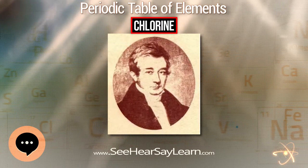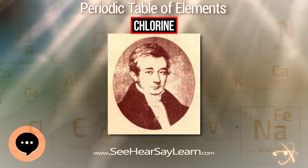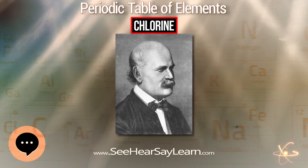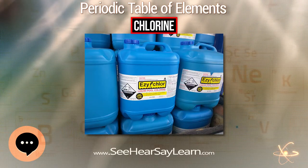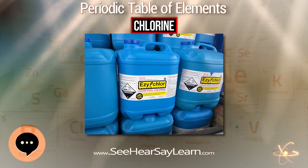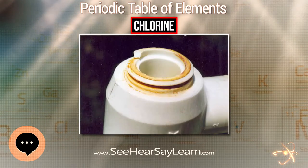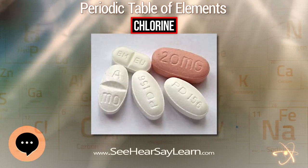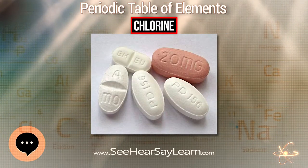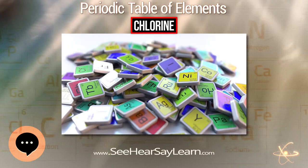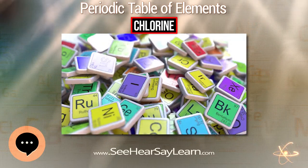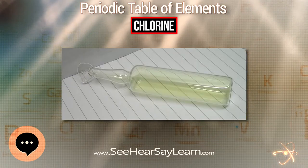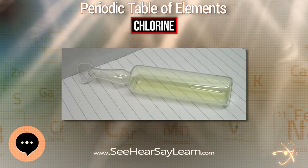Chloric acid is a strong acid, quite stable in cold water up to 30% concentration, but on warming gives chlorine and chlorine dioxide. Evaporation under reduced pressure allows it to be concentrated further to about 40%, but then it decomposes to perchloric acid, chlorine, oxygen, water, and chlorine dioxide. Its most important salt is sodium chlorate, mostly used to make chlorine dioxide to bleach paper pulp. The decomposition of chlorate to chloride and oxygen is a common way to produce oxygen in the laboratory on a small scale.